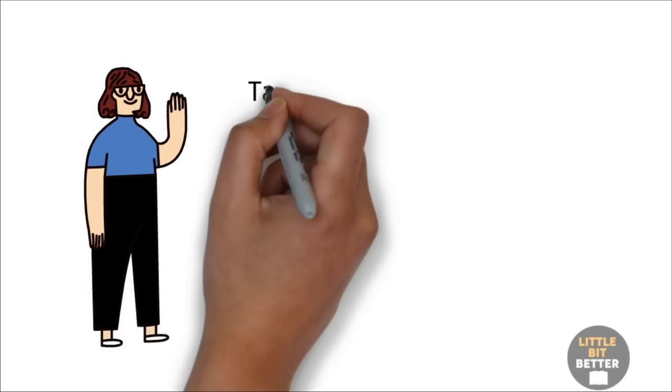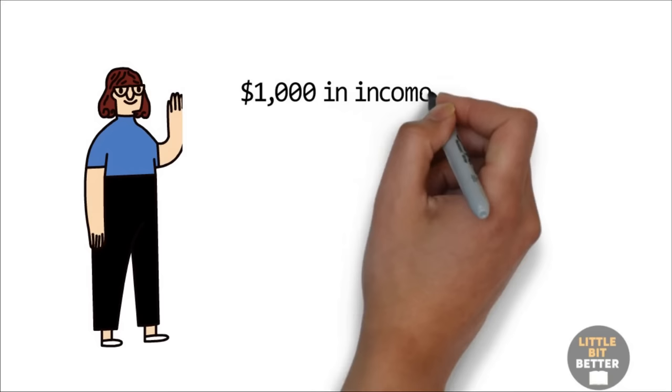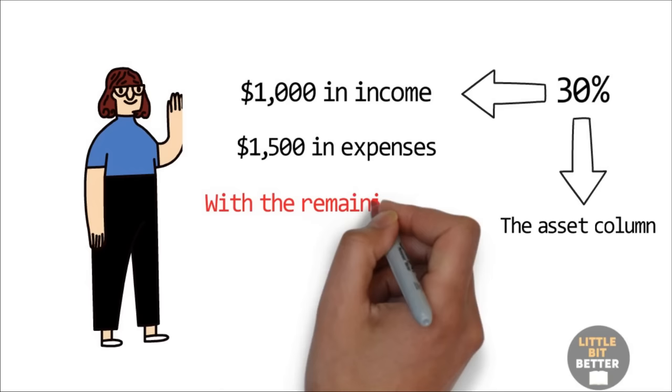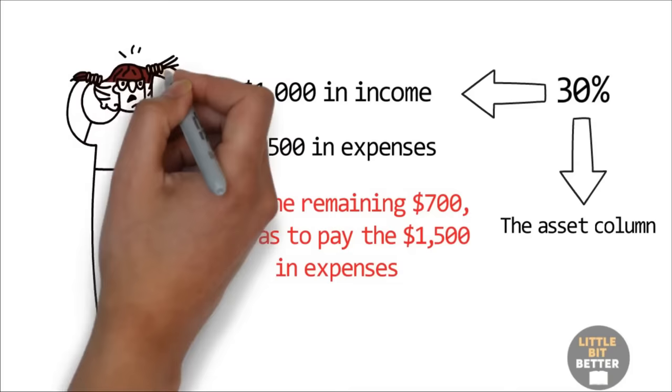Betty was instructed to take 30% of all income off the top as an expense and put that money in the asset column. Using simple numbers as an example, if we had $1,000 in income and $1,500 in expenses, Betty was to take 30% of the $1,000 and put that money in the asset column. With the remaining $700, she was to pay the $1,500 in expenses. Betty nearly died. She thought we were nuts. She said, you can't do that. You have bills to pay. She almost quit.